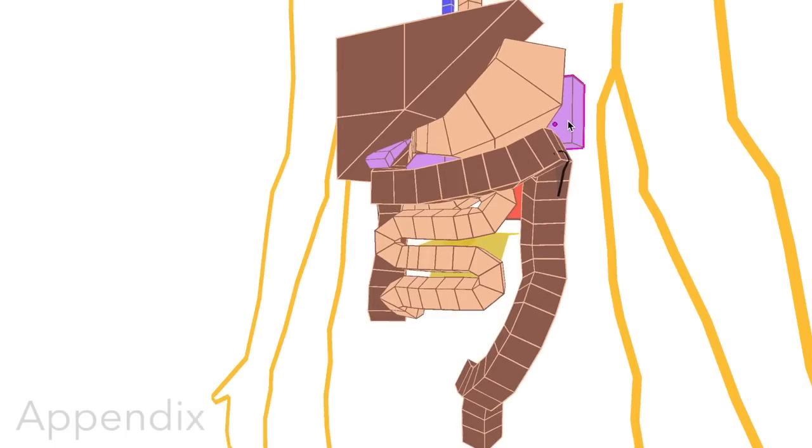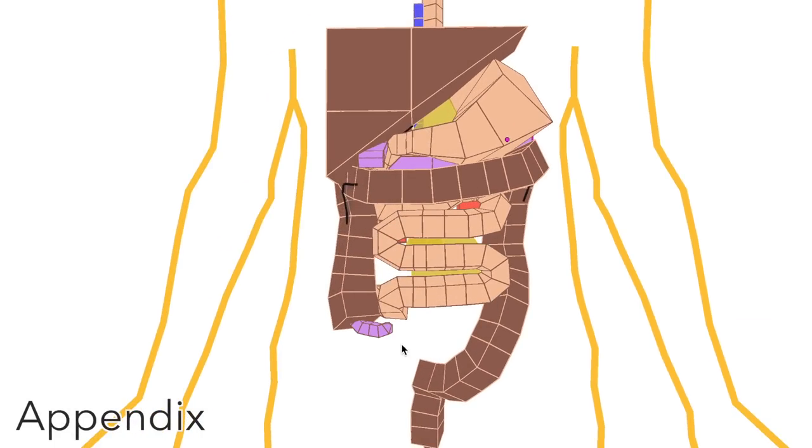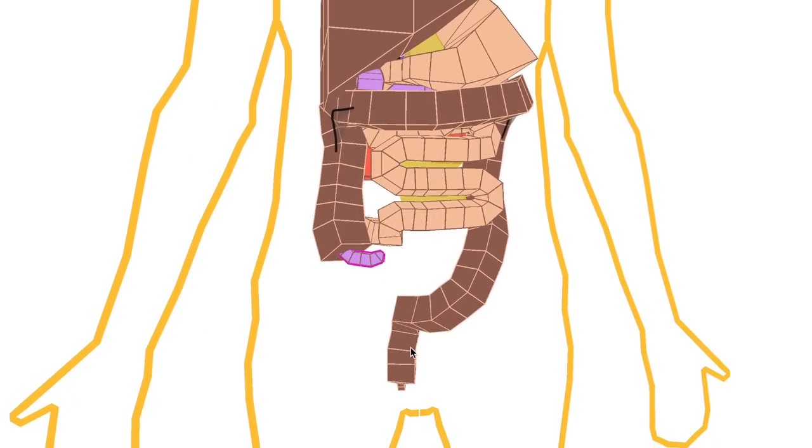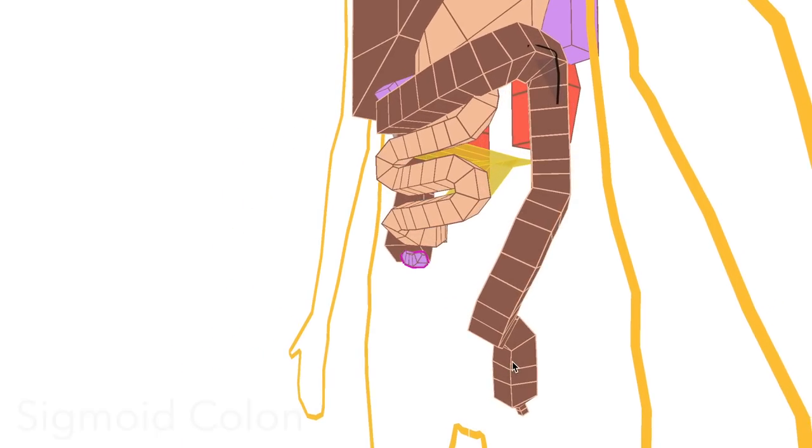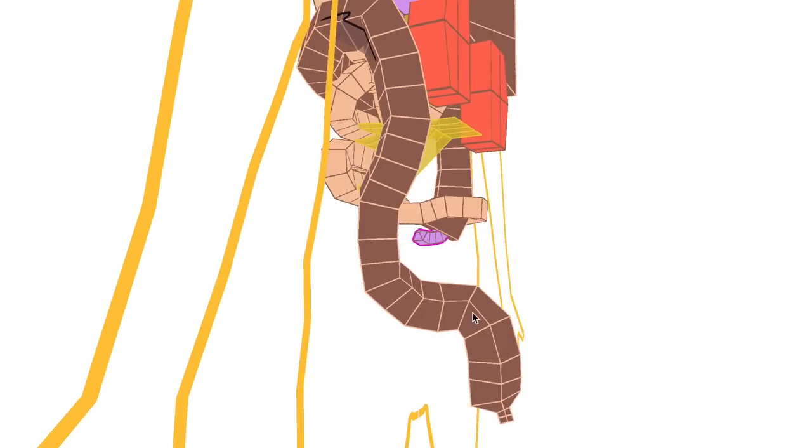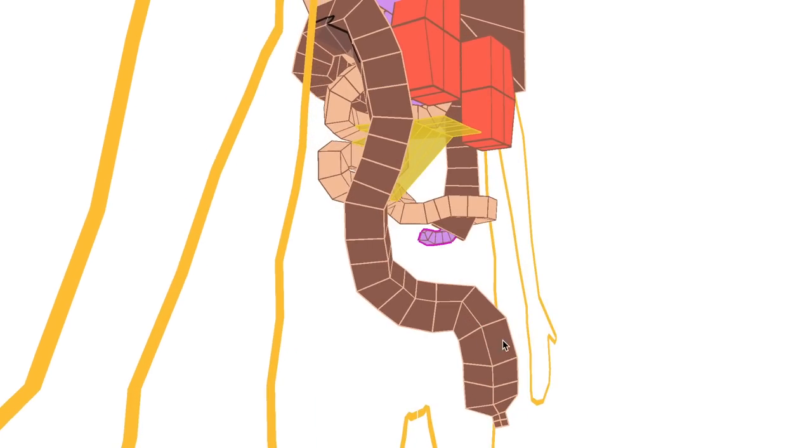The appendix is located just near the cecum there. And the last part of the large intestine is called the sigmoid colon. Sigmoid means S-shaped, so you can see its orientation there. The sigmoid colon is continuous with the rectum, which then ends in the anal canal.